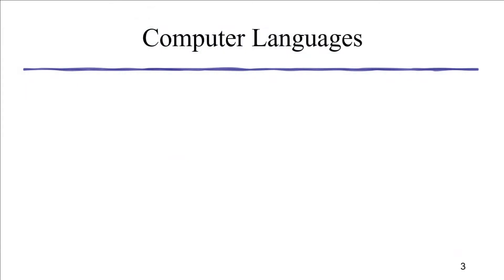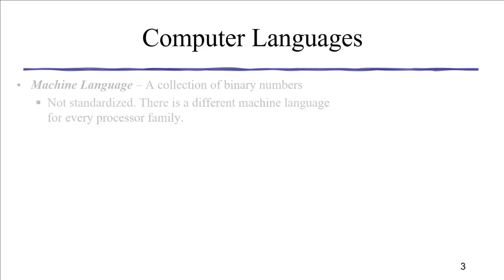Now we come to the means of communication with the computer as a programmer or developer. Our course is on the art of computer programming in C. We are trying to write an application to communicate with the computer, and as a programmer it is our responsibility to understand the purpose of computer languages.